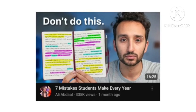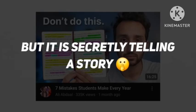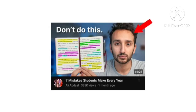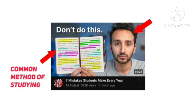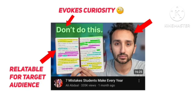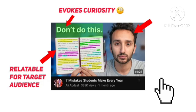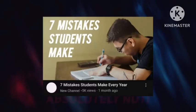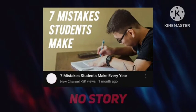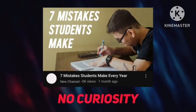On the other hand, let's take a look at this example. Even this thumbnail might look very simple at first, but it is secretly telling a story. We have a picture of Ali Abdaal holding study notes with highlighted lines. We know that highlighting notes is a very common way to study, which many students can relate to. And this is where the fun begins — the text says 'Don't do this.' Viewers get curious because they want to know why they should not do this. What are the consequences? Because of this curiosity, viewers click on it. That first thumbnail has no story, no psychology, no curiosity — and that's why it is not at all clickable.